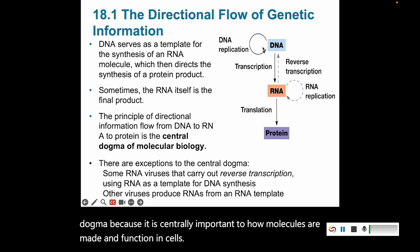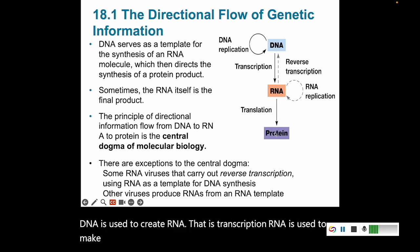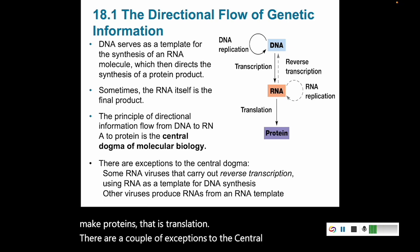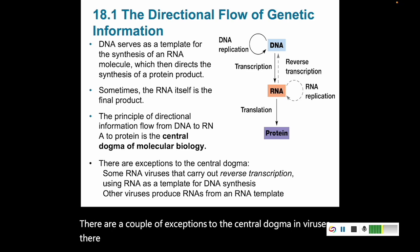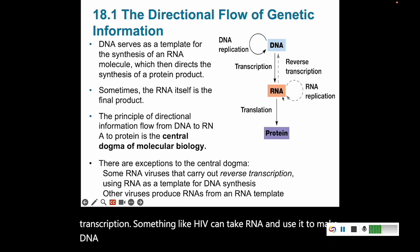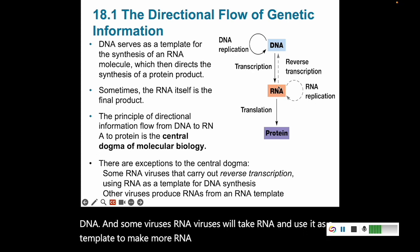DNA is used to create RNA — that is transcription. RNA is used to make proteins — that is translation. There are a couple of exceptions to the central dogma in viruses. There are some RNA viruses that can carry out reverse transcription. Something like HIV can take RNA and use it to make DNA. And some RNA viruses will take RNA and use it as a template to make more RNA. Some viruses don't use DNA at all.